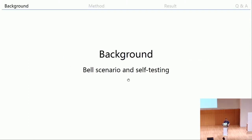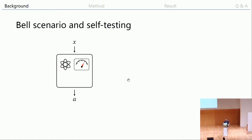Let's begin with some background. David already covered part of this in his talk, but maybe some of you missed the beginning, so I'll go through it again to make you more familiar with self-testing. Suppose you interact with a box — some magical box — where you press a button, essentially asking questions from a finite question set, and it gives you answers from a finite answer set.